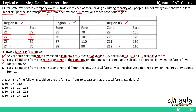The second rule: for a car moving from one zone to another of the same region, the total fare is equal to the absolute difference between the fares of the two zones from Z0. The entry fees are paid only when a car enters from Z0 to any region. For example, if a car moves from Z5 to Z8 within region R2, the fare will be the absolute difference of their fares from Z0. Z0 to Z5 is 70, Z0 to Z8 is 90, so fare from Z5 to Z8 is |90 - 70| = 20.